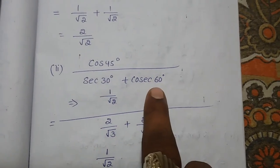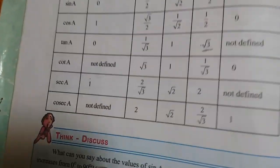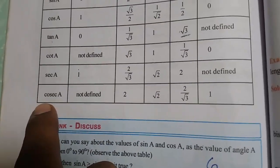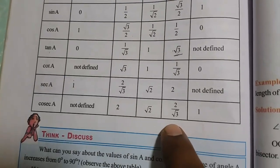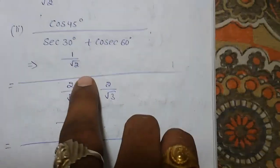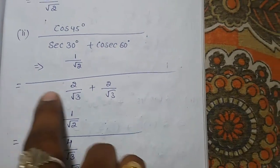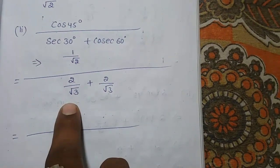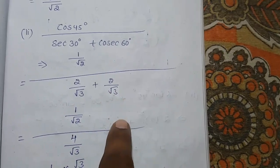Write that 2 by root 3 and cosecant 60°. Cosecant 60° is nothing but, here its 60° value is 2 by root 3. Substitute that value again here. 1 by root 2 by 2 by root 3 plus 2 by root 3.